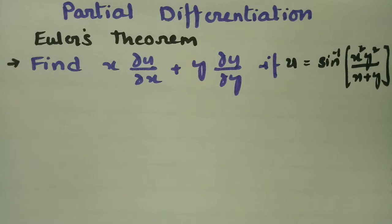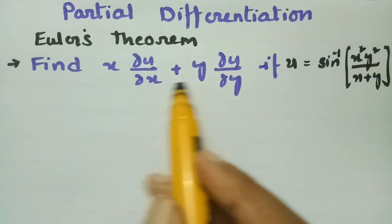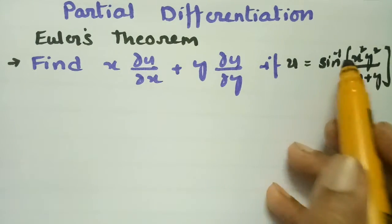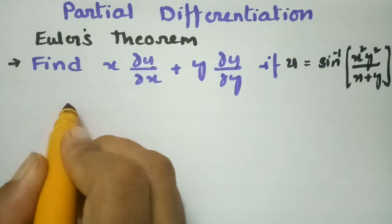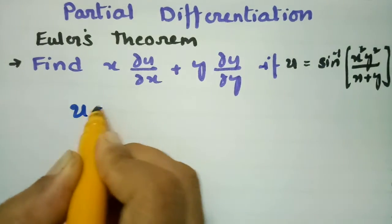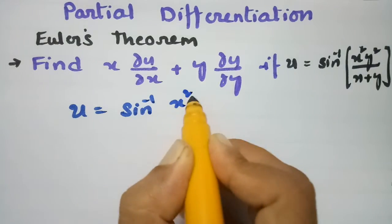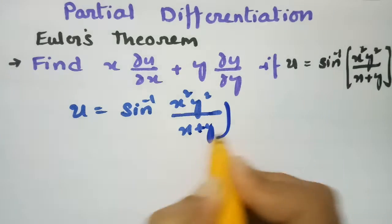In today's video I am going to solve a problem from partial differentiation. I have to find out x times ∂u/∂x plus y times ∂u/∂y, where u is given as sine inverse of (x² y²) divided by (x + y).